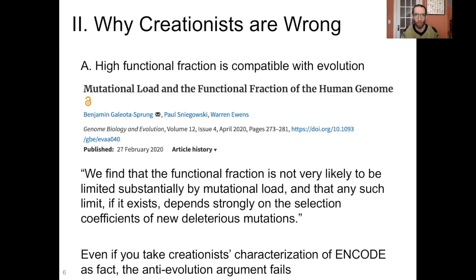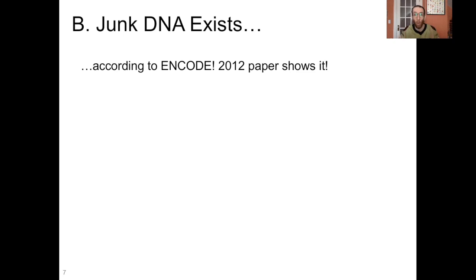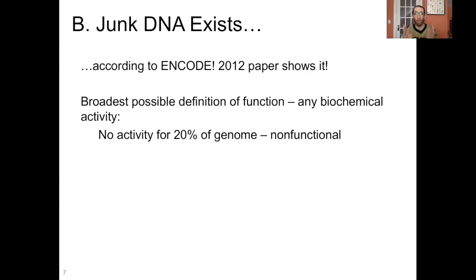But let's see if we can take the creationist characterization of ENCODE as fact — we cannot. The next thing to make clear is that junk DNA exists, and this is not just other authors saying this — junk DNA exists according to ENCODE. Even that provocative 2012 paper shows that junk DNA exists. The ENCODE team used the broadest possible definition for function, basically taking anything with any biochemical activity and calling it functional. Yet even then, they found biochemical activity for only 80.4% of the genome, meaning about 20% of the genome had no activity at all. So according to ENCODE's own standards, right off the bat you've got 20% of the genome that's non-functional. But wait — there's more. Much of the documented activity that they found is actually indicative of non-functional regions of the genome.